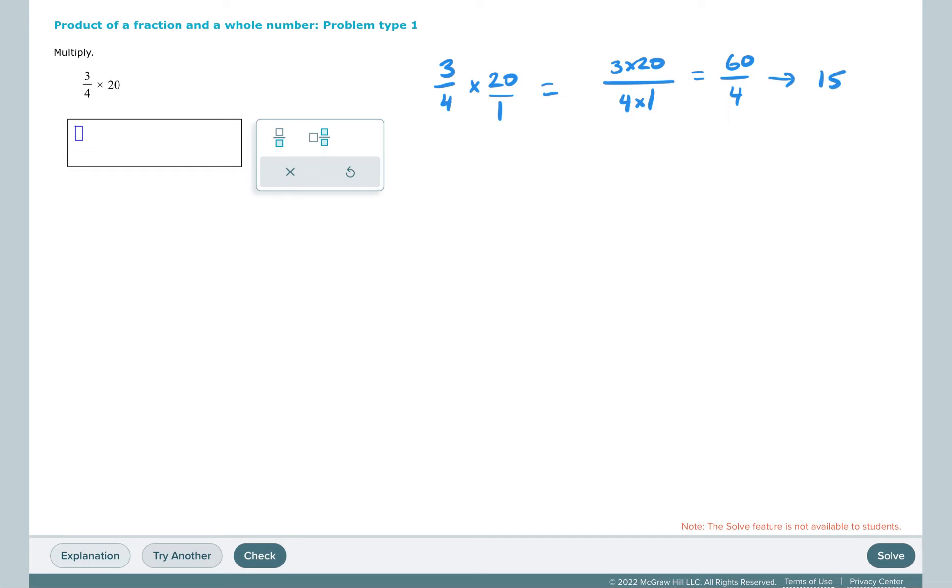60 over 4 equals 15. We could also simplify within the problem, so we could say 4 goes into 4 once, 4 goes into 20 five times, then we just have 3 times 5 is 15, and 1 times 1 is 1, so we get to 15 right away.